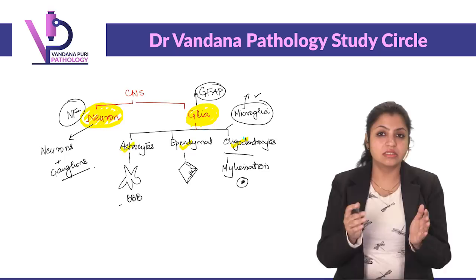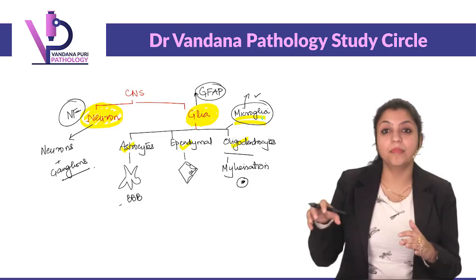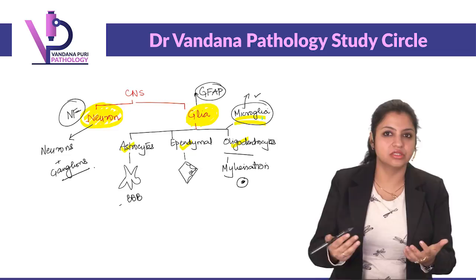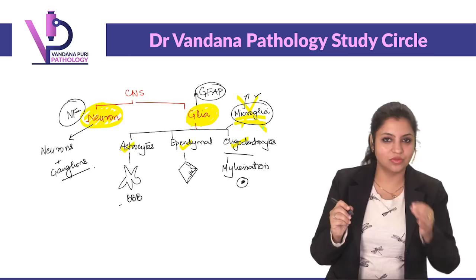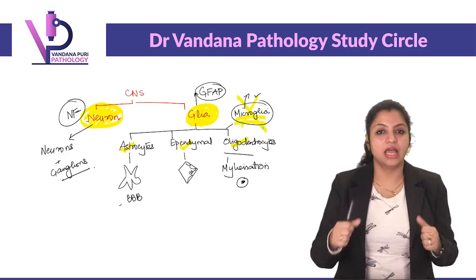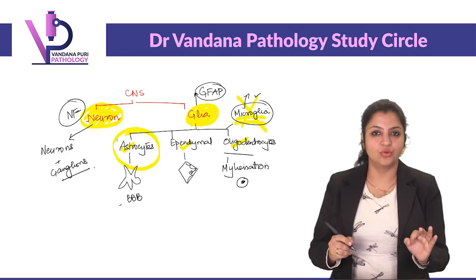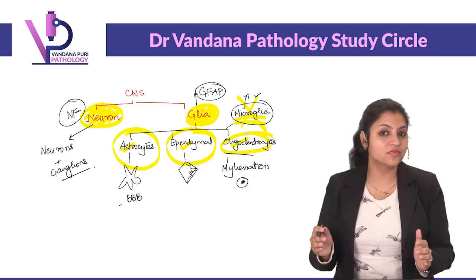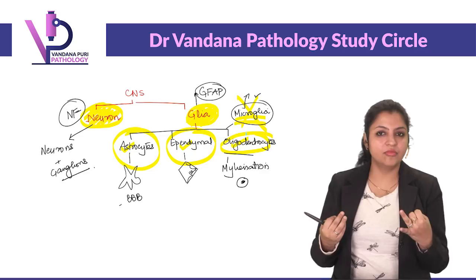Microglia is actually a macrophage of the brain — it reacts to many conditions but does not give rise to any tumor. So there are three types of gliomas: the tumor arising from astrocytes is called astrocytoma, the tumor arising from ependymal cells is called ependymoma, and the tumor arising from oligodendrocytes is called oligodendroglioma.